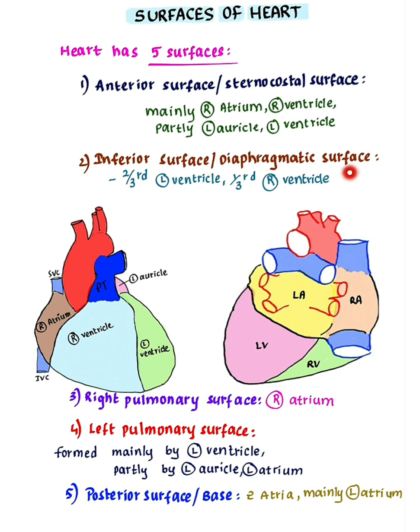Inferior surface or diaphragmatic surface. It rests on the central tendon of the diaphragm. Two-thirds of it is formed by the left ventricle, and one-third of it is formed by the right ventricle.